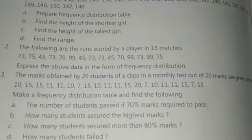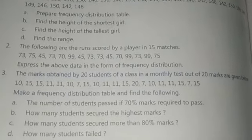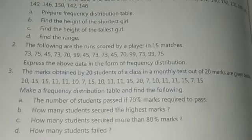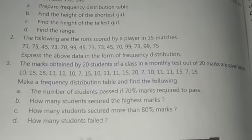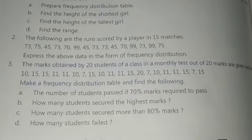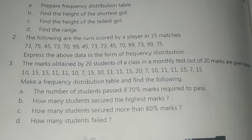Then, find the number of students who passed with 70% marks required to pass. Second, how many students scored the highest marks — give the number of students. Third, how many students scored more than 80% marks — give the count of those students. Last, how many students failed — that is, how many scored less than 33%.